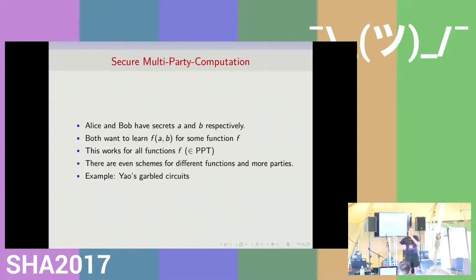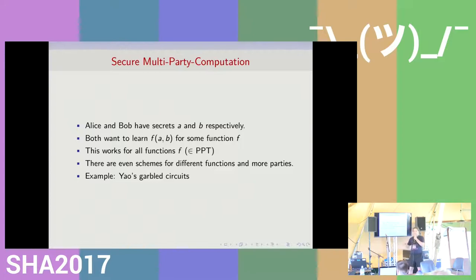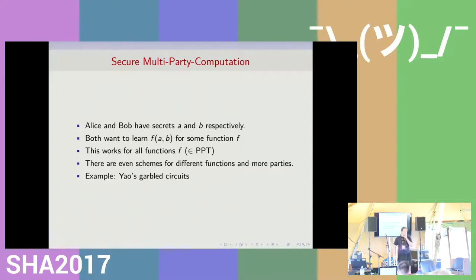In other situations it might be very different things, like secret keys for encryption or whatever. There shall be a function that allows computing something both parties are interested in if you put all the secret inputs into it — like who is richer. You can easily compute a function if you have all the inputs, but none of the parties are willing to publish their input. The nice thing about secure multiparty computation is that there are protocols that actually ensure you can do this for arbitrary functions computable in a reasonable amount of time. You can even extend that to arbitrarily many parties, like a ten-party protocol. The keyword to look into is Yao's garbled circuits.